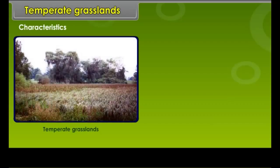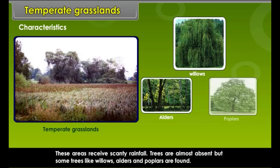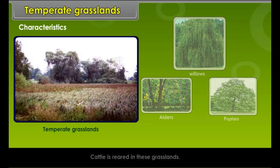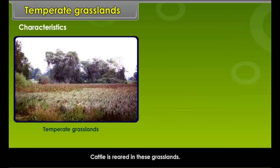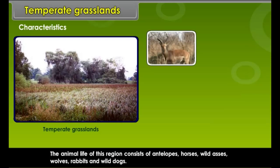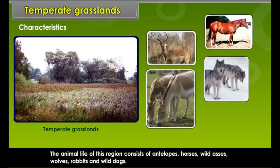These areas receive scanty rainfall. Trees are almost absent, but some trees like willows, alders and poplars are found. Grass is very short and turns brown in summer, withering in autumn. Cattle is reared in these grasslands. The animal life of this region consists of antelopes, horses, wild asses, wolves, rabbits and wild dogs.